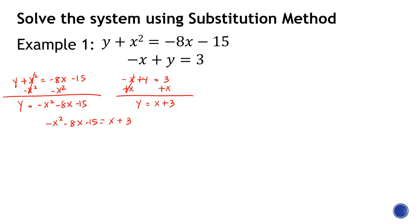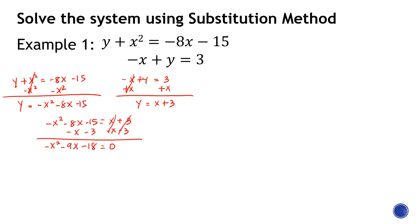Step three: we convert this into the standard form of the quadratic equation. I will subtract x and subtract 3 from both sides, so that everything equals zero. This gives us negative x-squared minus 9x minus 18 equals 0.